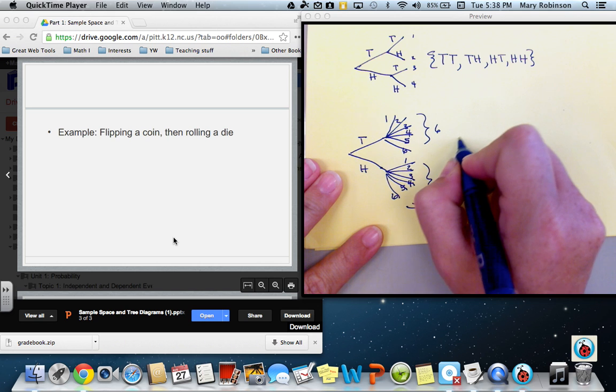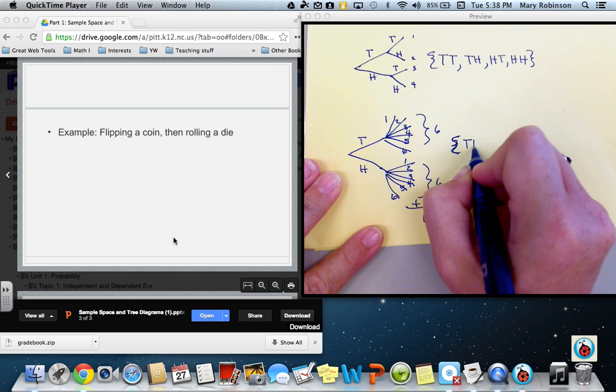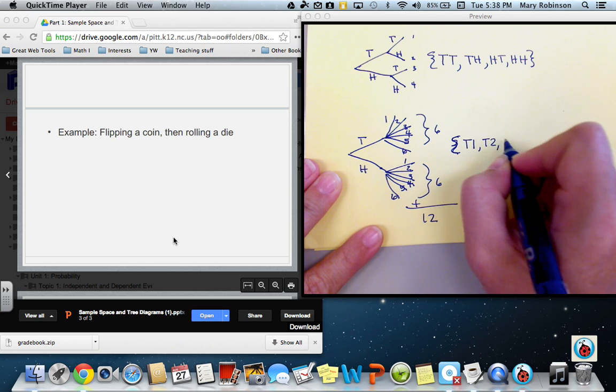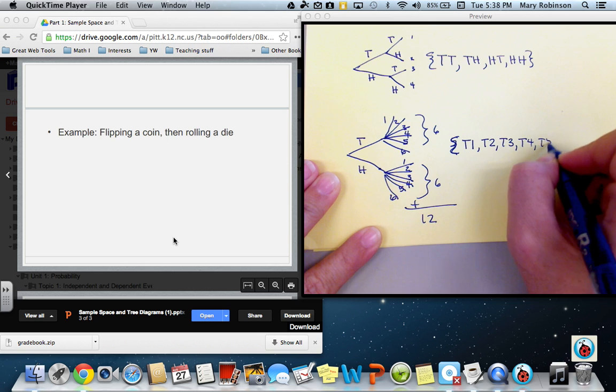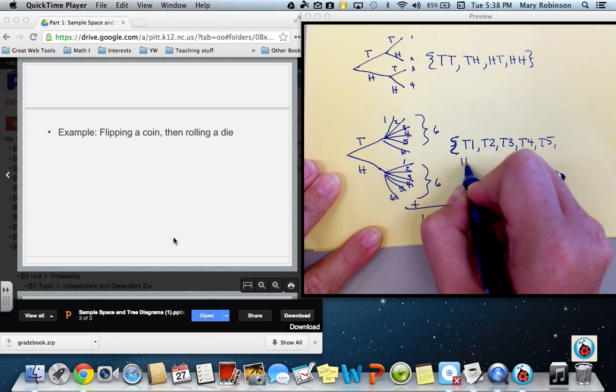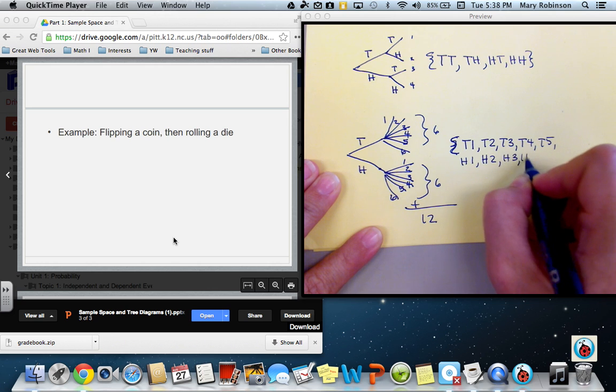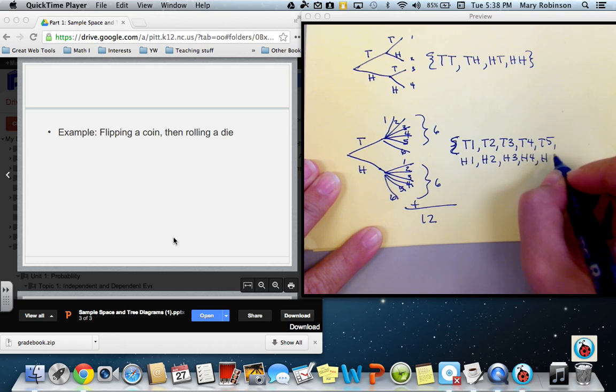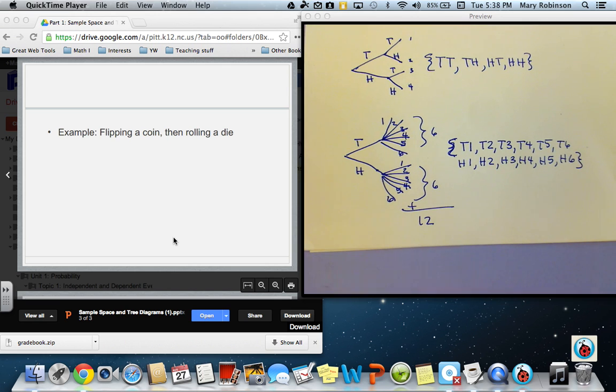So our sample space would be tails 1, tails 2, tails 3, tails 4, tails 5, heads 1, heads 2, heads 3, heads 4, heads 5, and I don't know why I left off tails 6, but there it is. So there are all 12 possible outcomes.